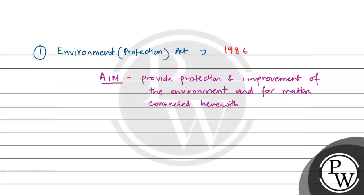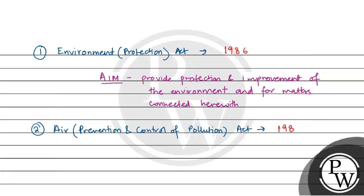The second is the Air Prevention and Control of Pollution Act. This was enacted in 1981. But the amendment to add noise pollution also happened in 1987.